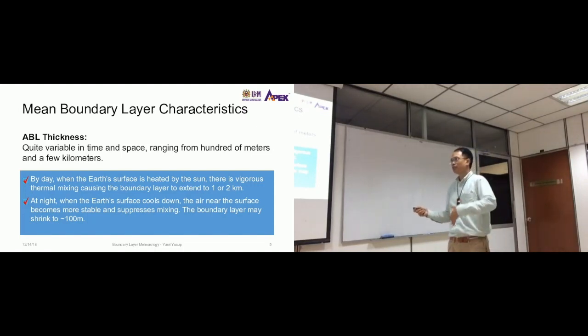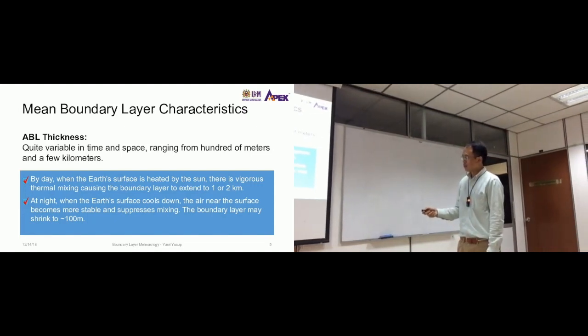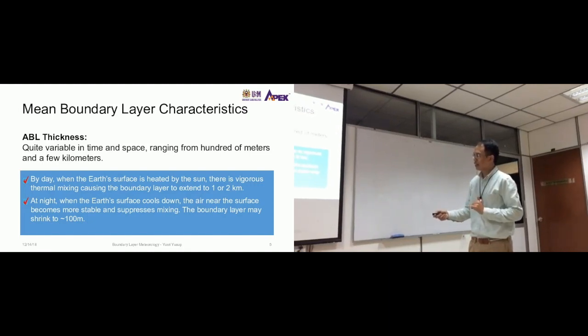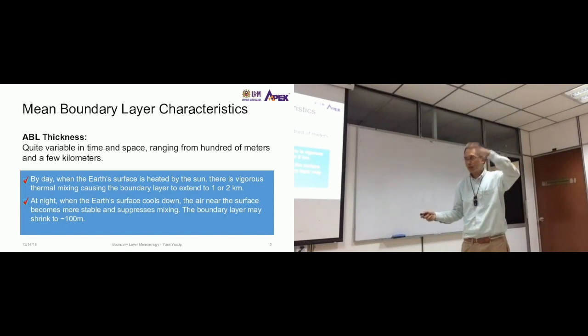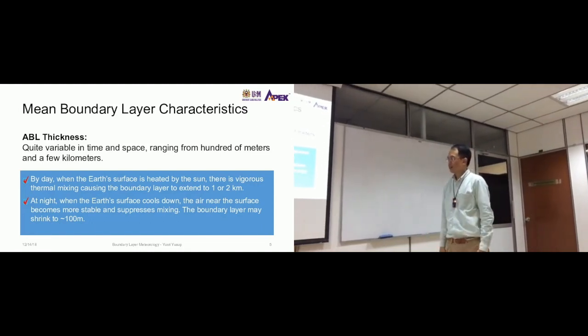It could even go up to maybe three kilometers, but it's within this order of magnitude of one to five kilometers. At night, when the earth's surface cools down, the air near the surface becomes more stable. You've seen this term before in the air quality modeling subject. This stable atmospheric condition would suppress mixing. There would be less mixing in the atmosphere, which would reduce the height of the boundary layer, even down to 100 meters. Some buildings could be above the boundary layer at night in areas where buildings are tall.